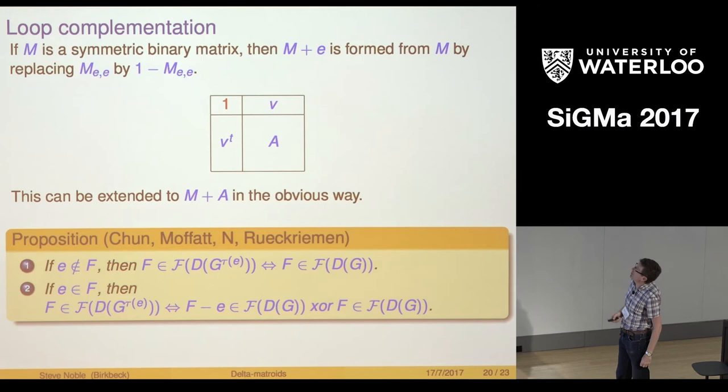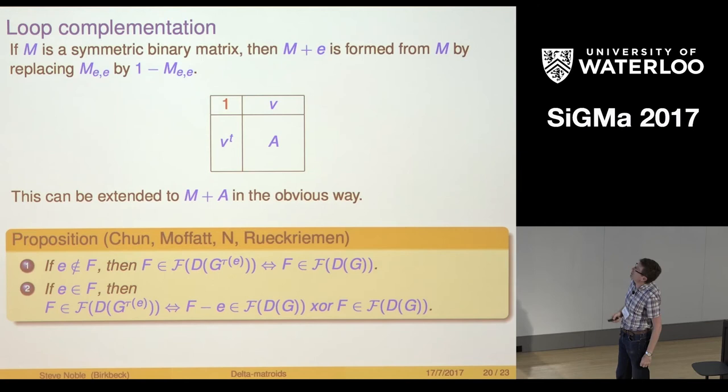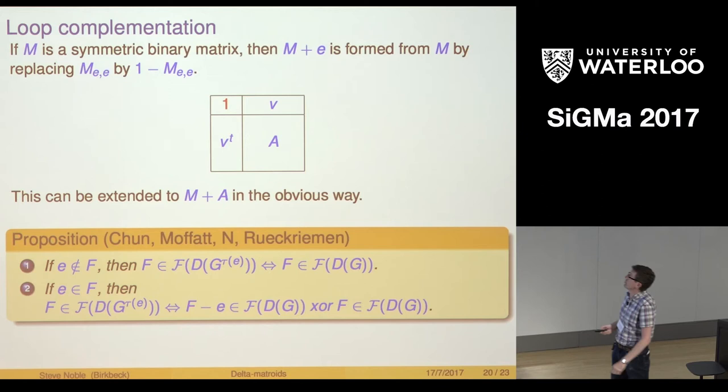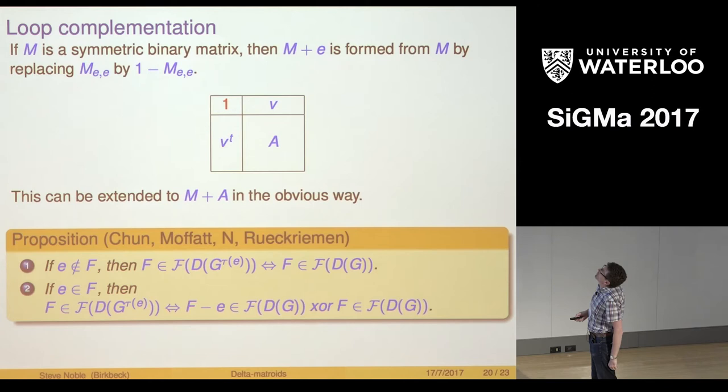At the same time, or a little bit later, we were thinking of what the twisting, half twisting operation does in a ribbon graph. Don't worry about the details of what this says, but it does the same thing. It's the same operation on the delta matroid, which was a little surprising, although you can see why that might happen when you think about it a little more.